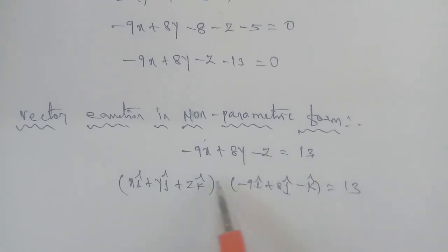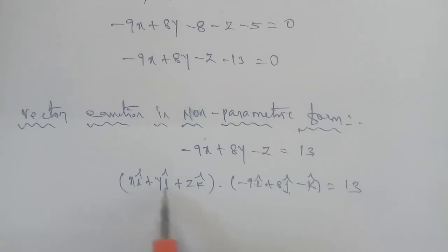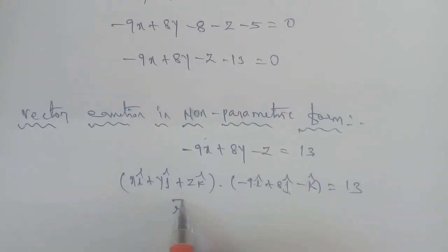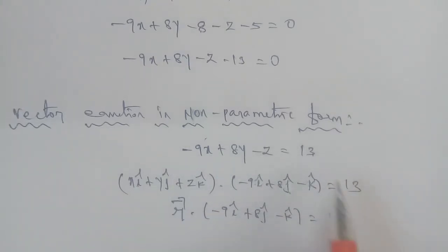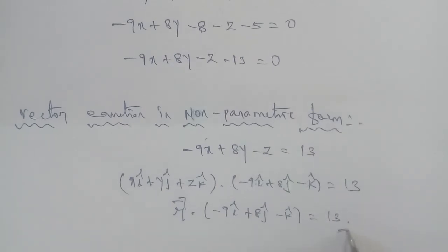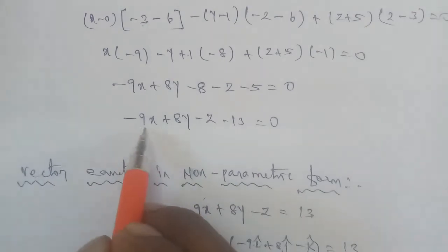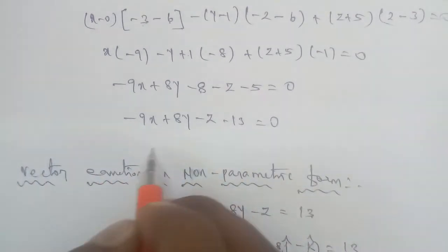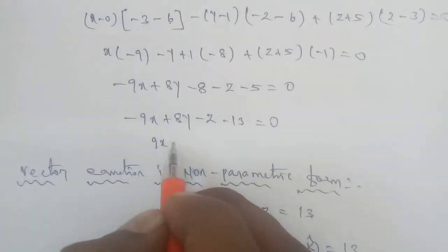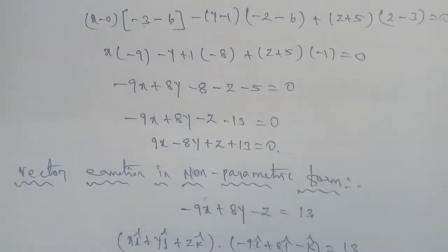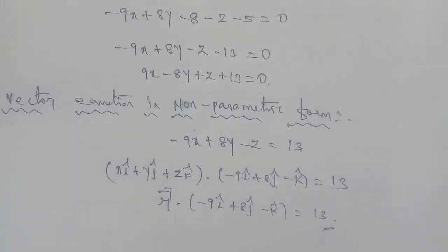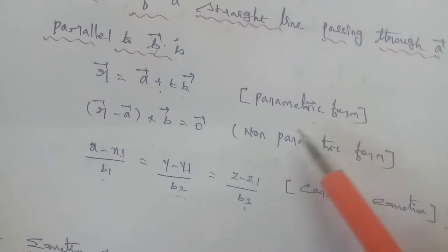So x·i cap plus y·j cap plus z·k cap is the r vector. Therefore, r vector dot (minus 9·i cap plus 8·j cap minus k cap) equals 13. This is the non-parametric form vector equation. This is the answer. The Cartesian equation is minus 9x plus 8y minus z plus 13 equals 0.